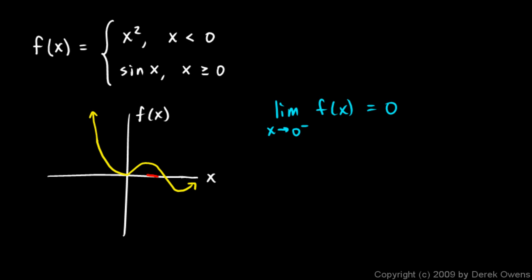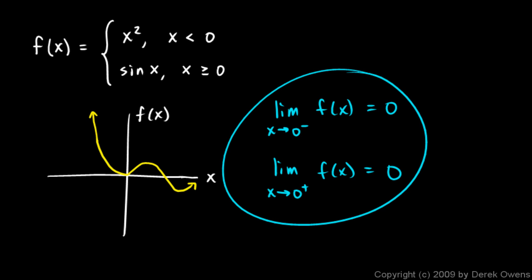And you can also imagine x getting closer and closer to 0 from the right. And you can see these y values are getting closer and closer to 0. So the limit as x approaches 0 from the right of f of x equals 0. Now you don't need to write all of that, but you do need to think it.